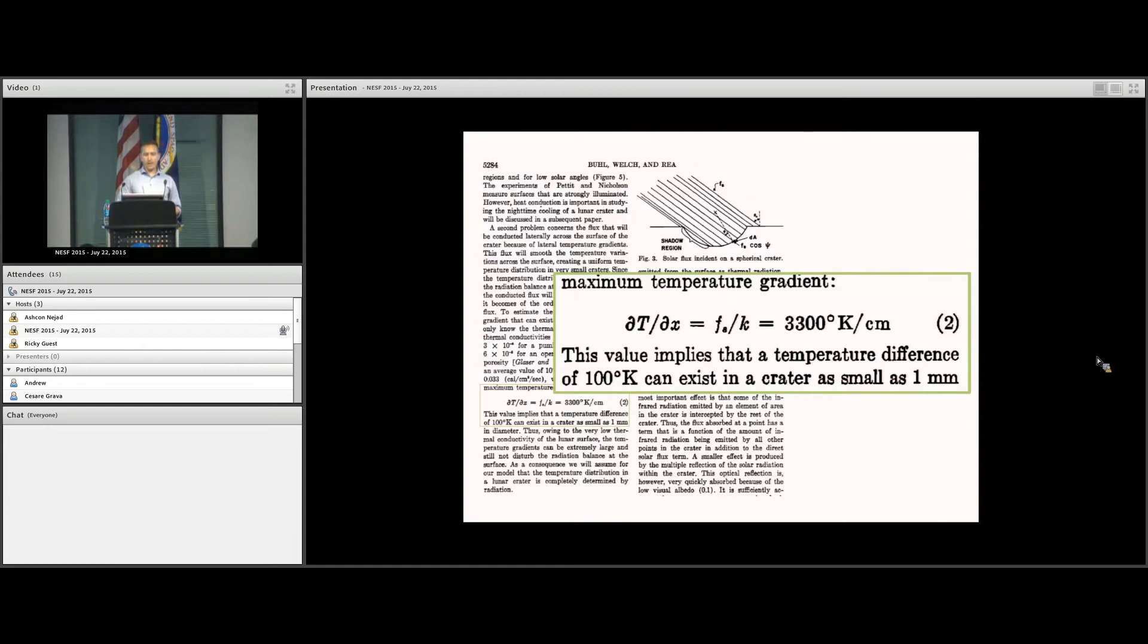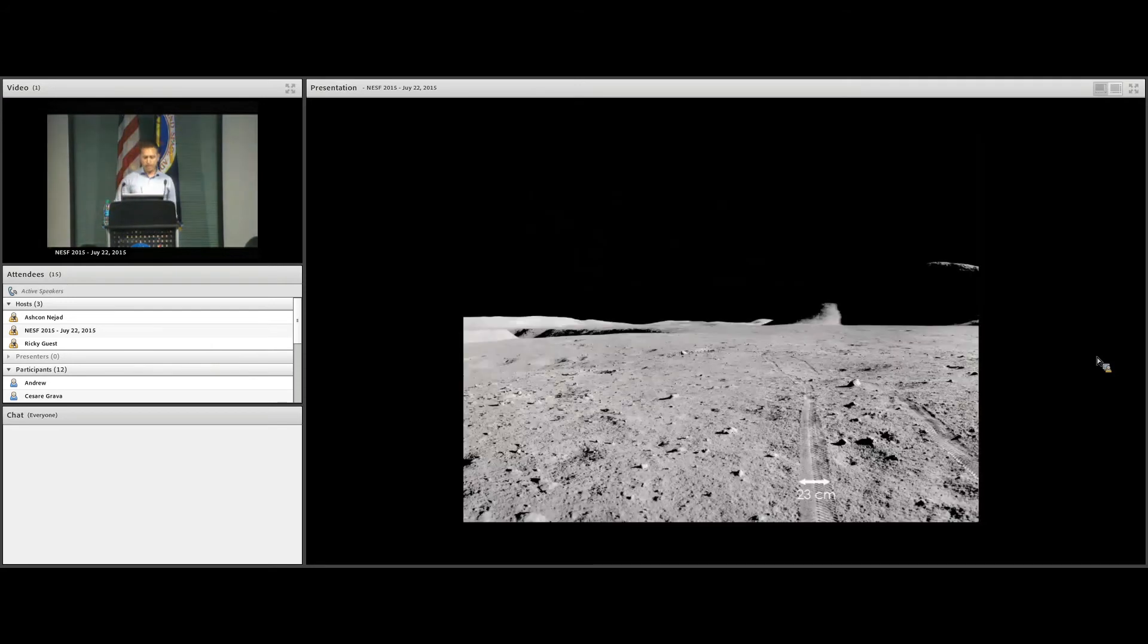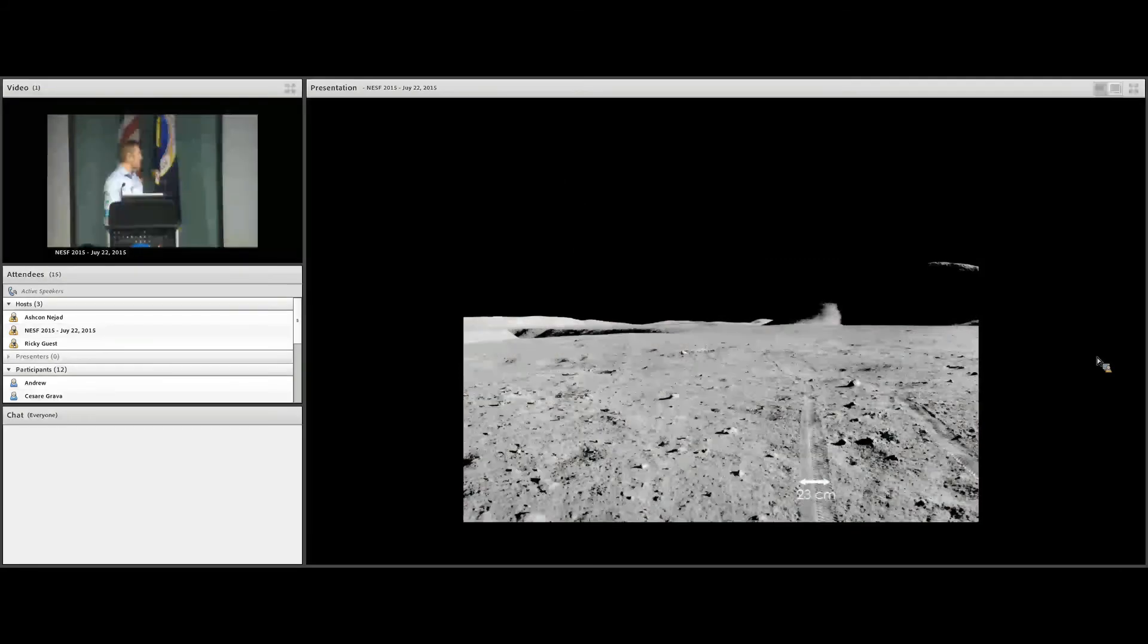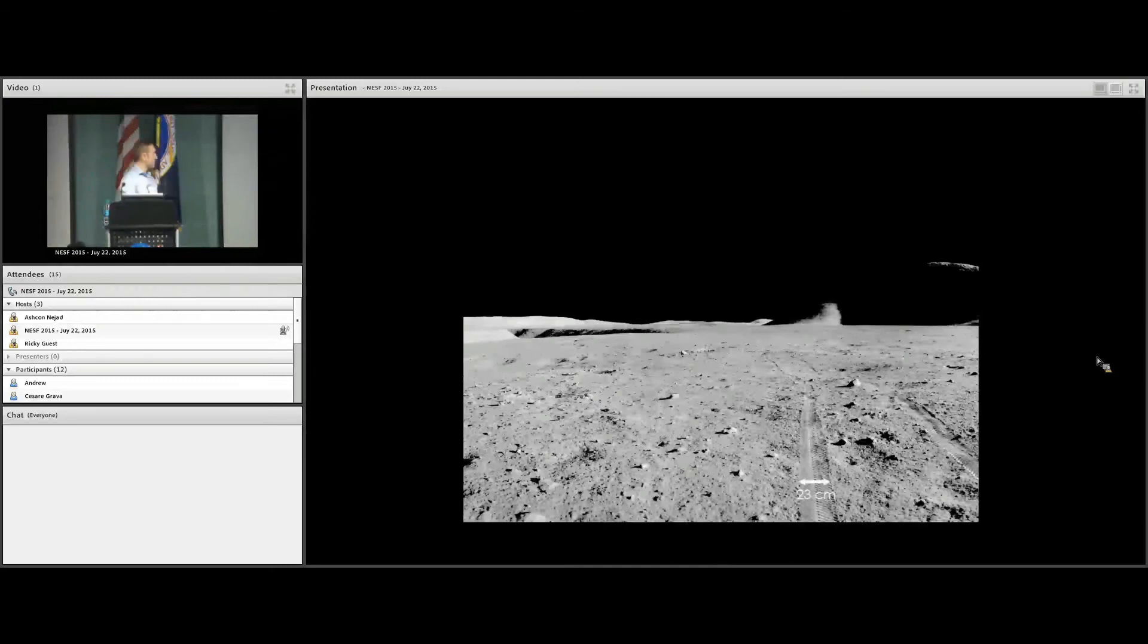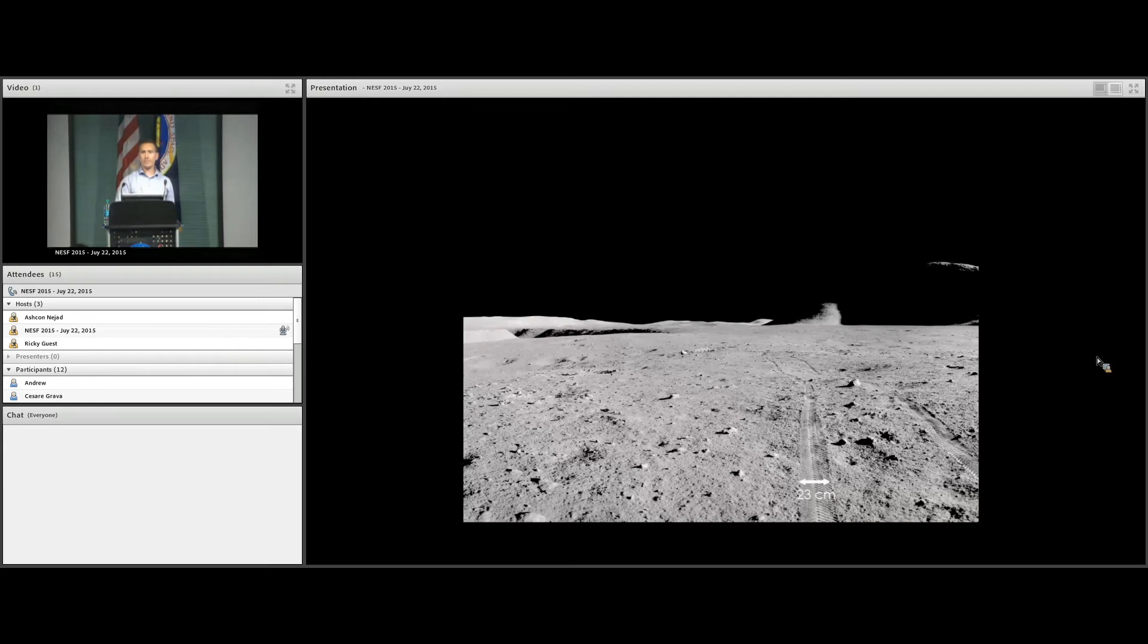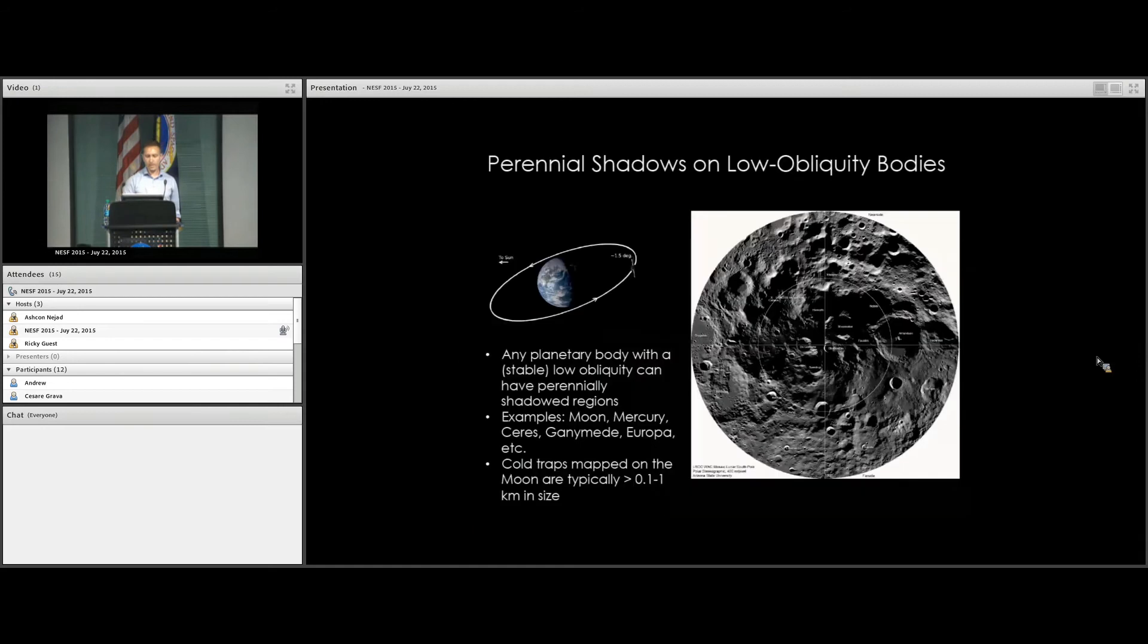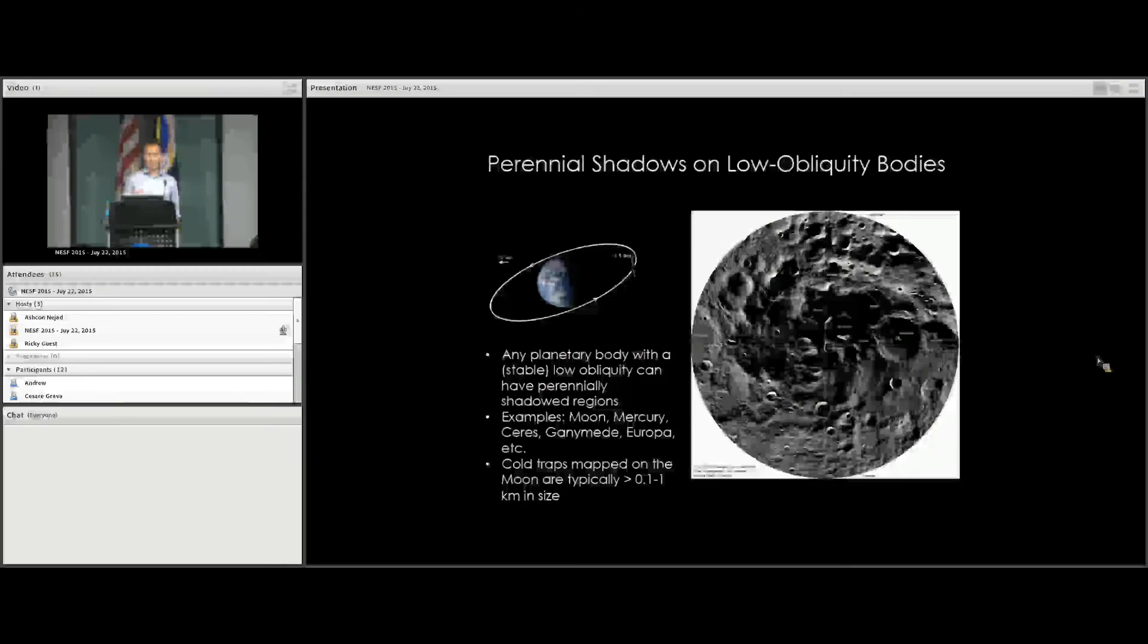This doesn't occur naturally on Earth, so you have to redefine temperature in a different way and think about scales. If you take a thermometer and plug it into the lunar soil, the temperature you measure at one location could be vastly different from the temperature you measure just a few millimeters away. Here's an example for scale: the Apollo rover tracks are 23 centimeters across. Even within one rover track, basically every little shadow you see is going to be hundreds of degrees colder than the illuminated parts nearby. This has very important consequences for trapping volatiles on the moon and other airless bodies.